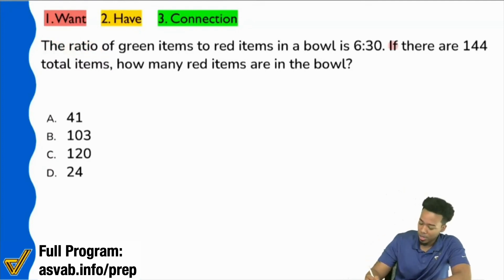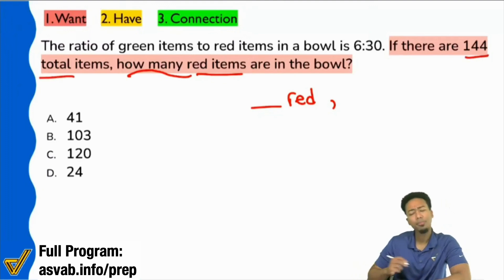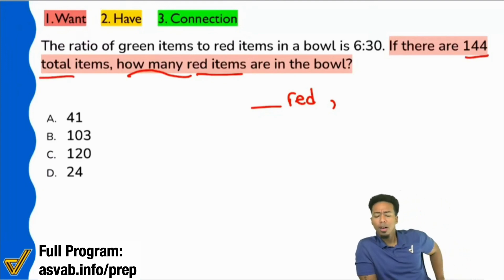But if you read here, it says everybody, how many red items are in the bowl? So for us here, I'm going to say blank red items. And then it says 144 what? Help me out guys, 144 what? What's the comparison here? Red to what?